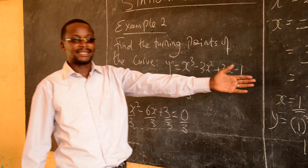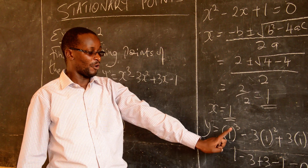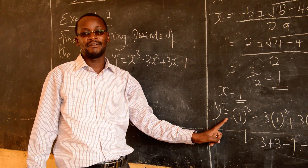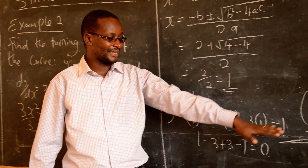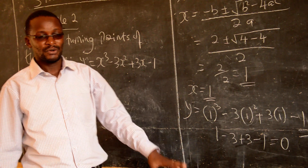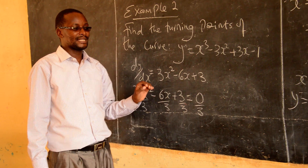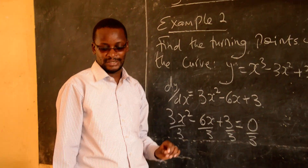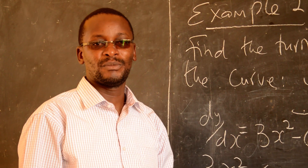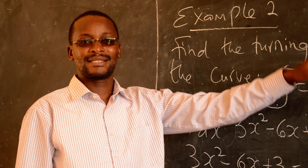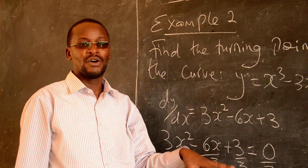There are some instances where the discriminant will not be zero, and you will get more than one point. For each value of x, you get the corresponding value of y, giving you several turning points for that particular curve. That is how you get a stationary point. In our next lesson, we will look at the different natures of stationary points. I am going to post an assignment so that you can test this skill and see how well you understand how to get the stationary point of any curve.